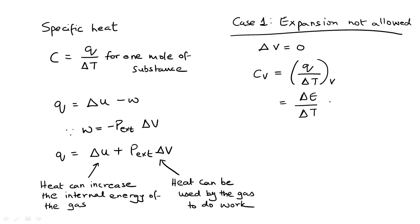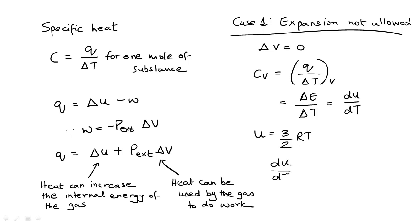This can be written for infinitesimal changes as dU by dT. Recall that for one mole of a monoatomic ideal gas, we have derived the internal energy to be U equal to 3/2 RT. So dU by dT is equal to 3/2 R, and Cv is equal to 3/2 R.